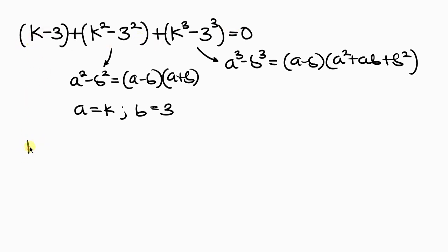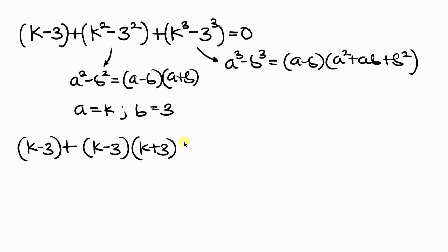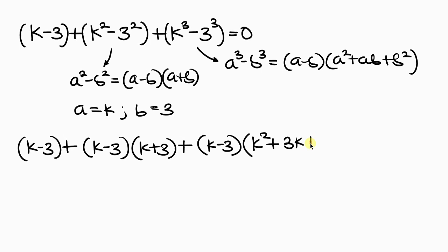Let's apply this to our original expression. So we have this to be (k minus 3), plus, applying the difference of two squares, this can be written as (k minus 3)(k plus 3), plus, applying the difference of two cubes, we have (k minus 3) times (k squared plus 3k plus 9). This is equal to 0.